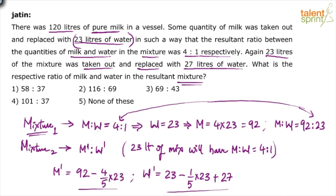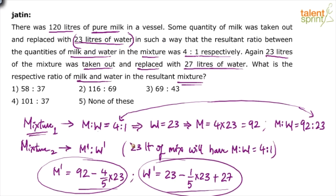Now take the ratio — what is the respective ratio of milk and water in the resultant mixture? M' is to W' equals what? Solve for M', solve for W', and take M' to W'. Do this calculation quickly. Most of you have marked the answer as option 3, but check your calculation — the answer will not be option 3. The answer will be option 5: none of these.